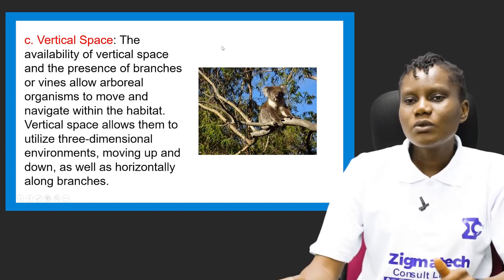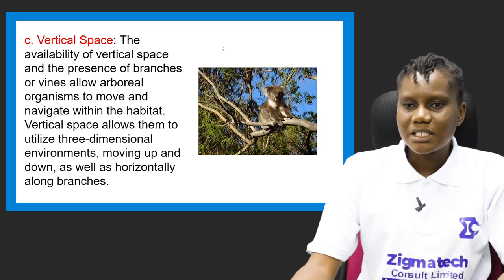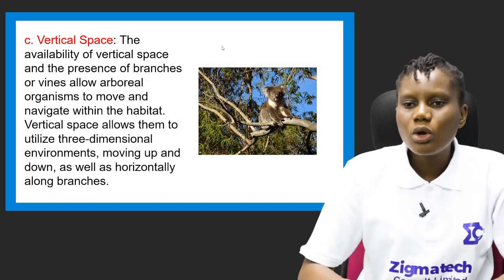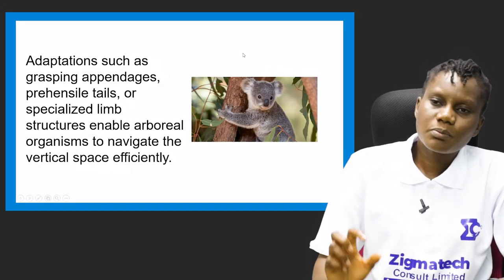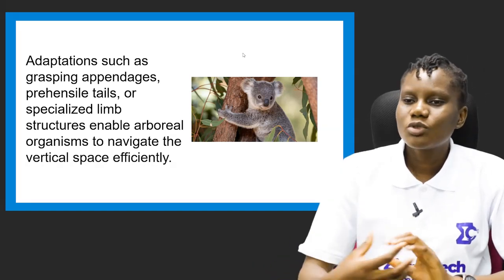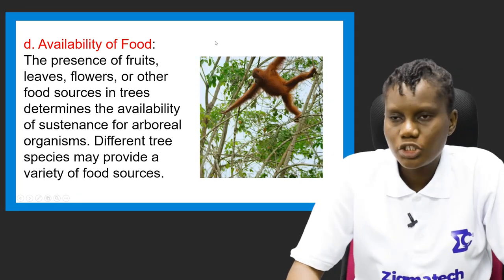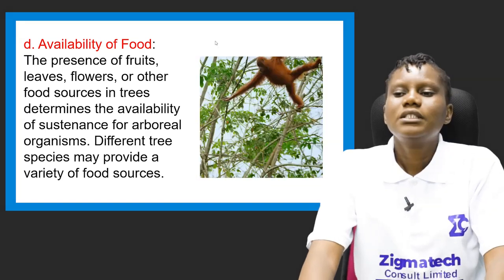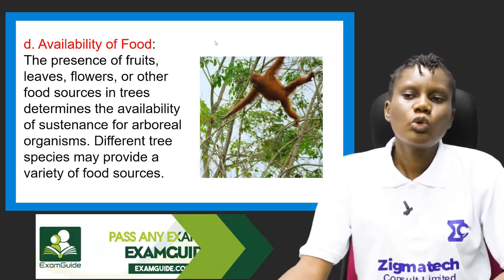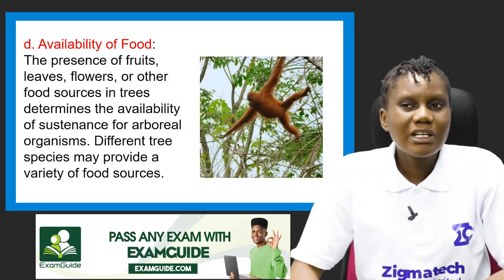Arboreal organisms utilize micro-habitats for feeding, resting, and reproduction. The third factor is vertical space. The availability of vertical space and the presence of branches or vines allow arboreal organisms to move and navigate within the habitat. Vertical space allows them to utilize three-dimensional environments, moving up, down, and horizontally. Adaptations such as grasping appendages, prehensile tails, or specialized limb structures enable navigation of vertical space.